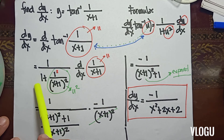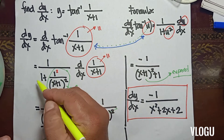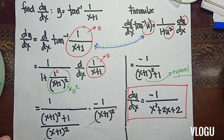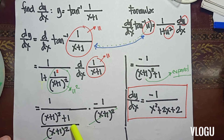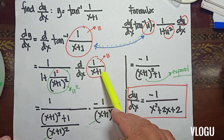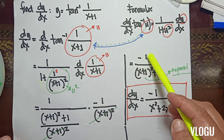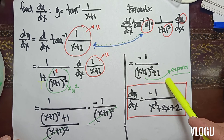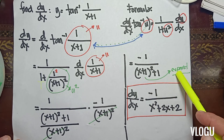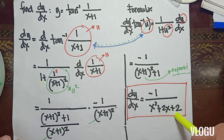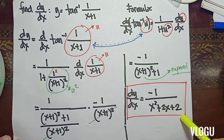So (x+1) divided by 1 gives us 1 times 1, meaning we have (x+1) squared plus 1 over (x+1). The derivative of 1 over (x+1) is negative 1 over (x+1) squared. We can cancel (x+1) squared, leaving negative 1 over (x+1) squared plus 1. Expanding (x+1) squared gives the final answer: negative 1 over x squared plus 2x plus 2.